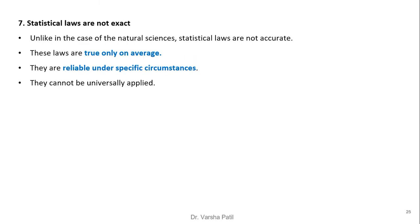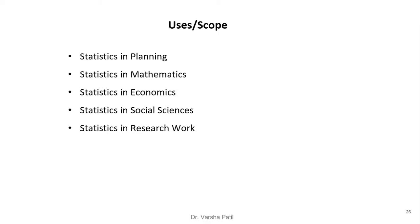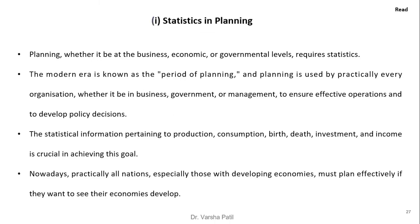Statistical laws are not exact unlike in natural science — they are based on averages and are reliable only under specific circumstances, giving approximations rather than correct answers. Regarding usage, statistics can be used in planning, mathematics, economics, social science, and research work. Detailed explanations of usage in different areas are provided on-screen for the viewer to read.